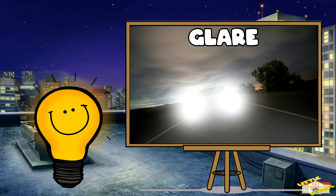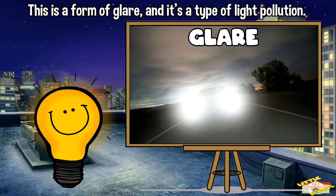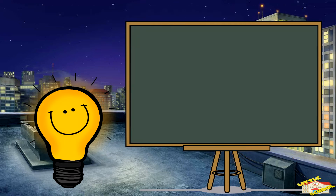Glare: glare occurs when lights are too bright and make it hard to see. For example, if you're driving at night and someone has their headlights on high beam, it can be blinding. This is a form of glare and it's a type of light pollution.